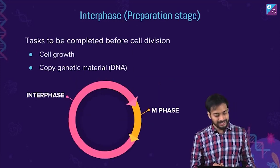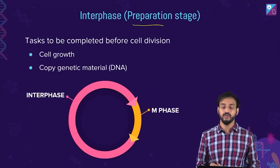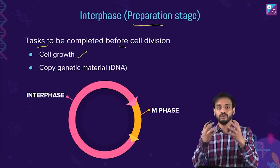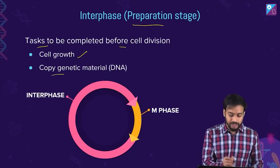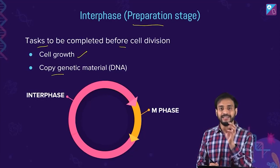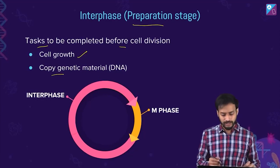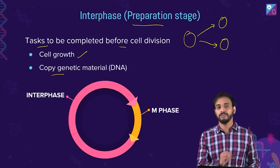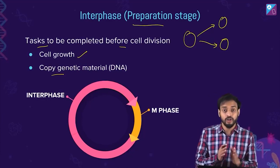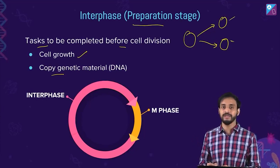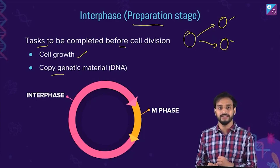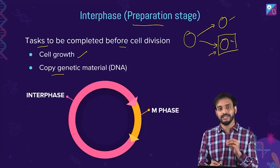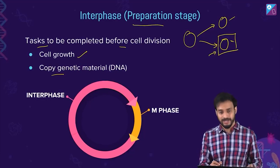Interphase is the preparation stage. The tasks to be completed before cell division are: the cell must grow, and it must copy its genetic material — the DNA. The genetic material has to be copied; otherwise, when the parent cell forms two daughter cells, the daughter cells would not receive the genetic material, and the cells would not survive.